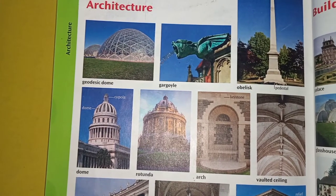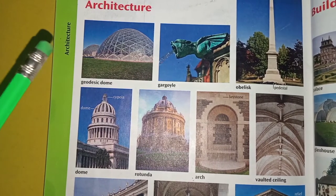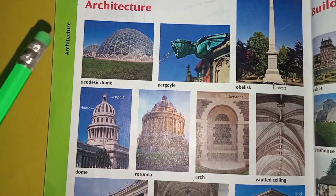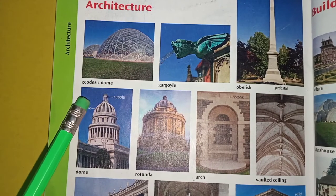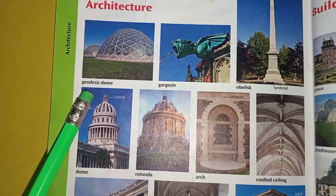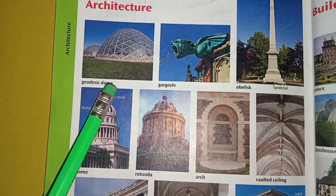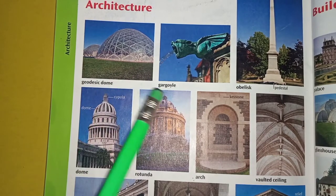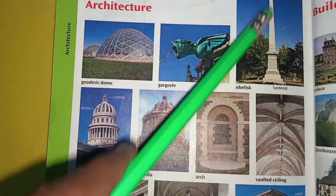Hello everyone, welcome to this learning channel. Today I have brought this lesson about different architecture designs and buildings. Here we have the first picture in this dictionary page. On this dictionary page we have: geodesic dome, gargoyle, obelisk.